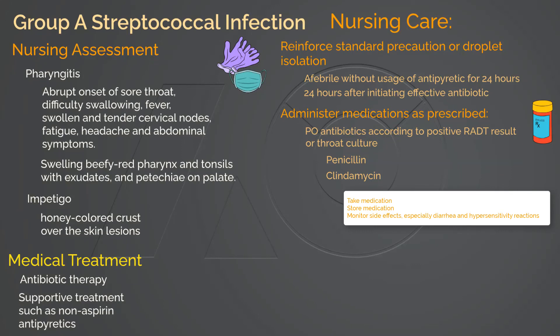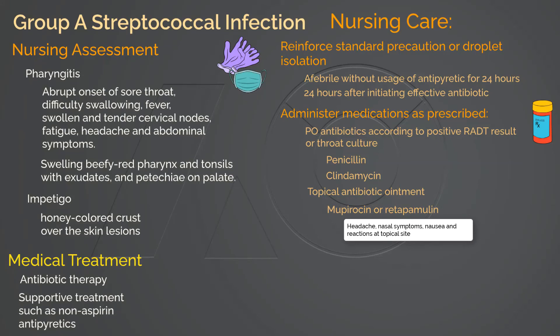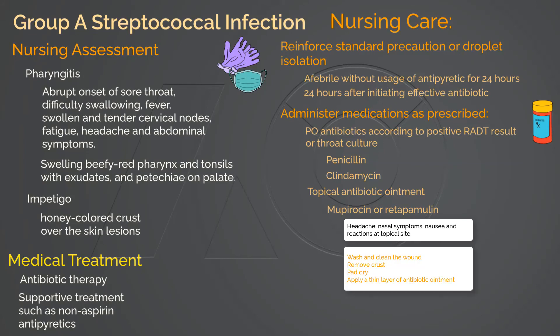Teach the patient and family to monitor and report adverse effects, particularly diarrhea and hypersensitivity reactions. Mupirocin is the topical antibiotic ointment used for impetigo. Adverse effects include headache, rhinitis, irritation in the nasal cavity, nausea, burning or tingling sensation at the topical site, pruritus, and rash. Teach the client and family on appropriate topical application: wash the lesion, gently remove the crust and pat dry, then apply a thin layer of ointment over the skin lesion. The patient may leave the lesion uncovered or covered. Teach the patient and family members to monitor and report adverse effects.